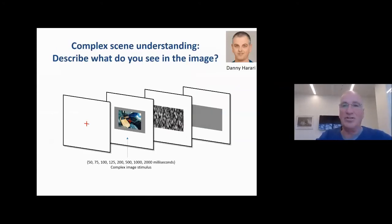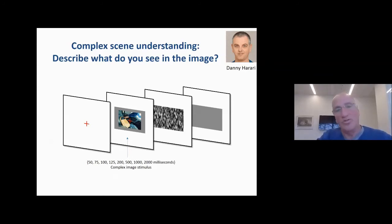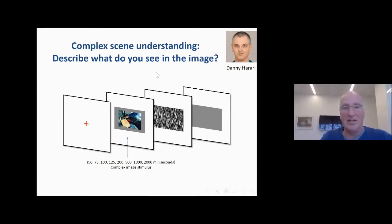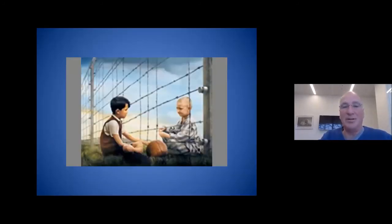In this introduction, I want to introduce work done by Daniel Arari together with Shimon Ullman about complex scene understanding. What he's done is basically take images, shown them for different times before using backward masking — with a mask shown to mask the image — to see how much information you have about the image.